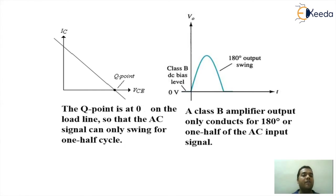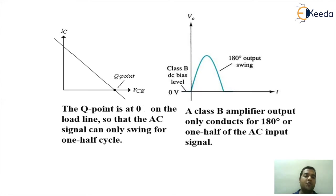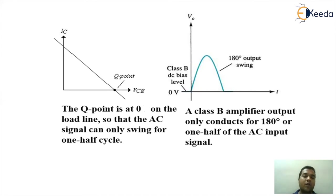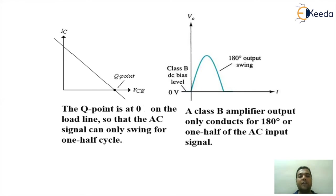An obvious question arises: when we get only a half cycle output even with a full cycle input, how do we avoid distortion and get a full cycle for the speakers? To ensure this, we use a small trick. Since a complete cycle consists of a positive half cycle and a negative half cycle and we get only one half cycle, we use one more Class B circuitry for the other half cycle. The results of both are then merged to give a complete cycle at the output. This is the push-pull arrangement to compensate and improve efficiency.